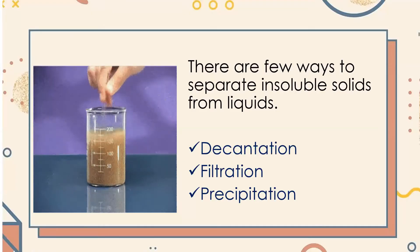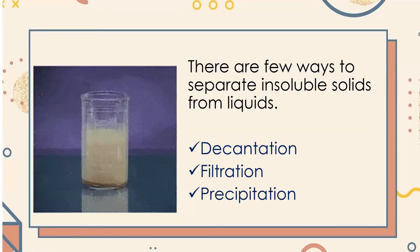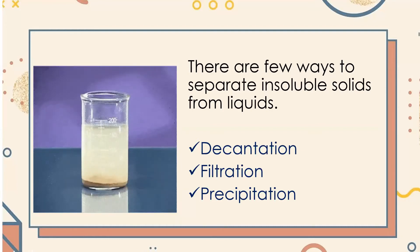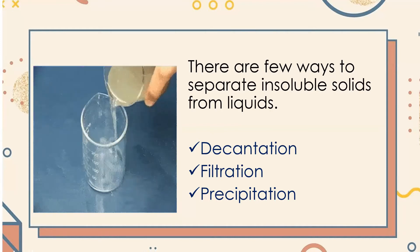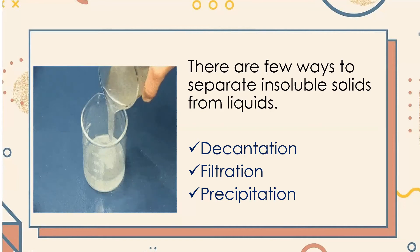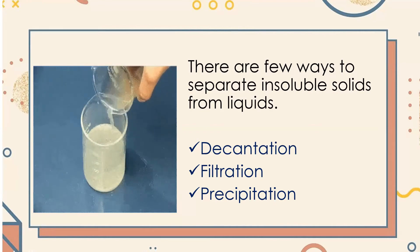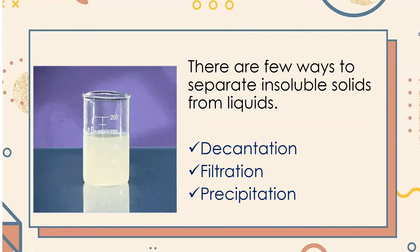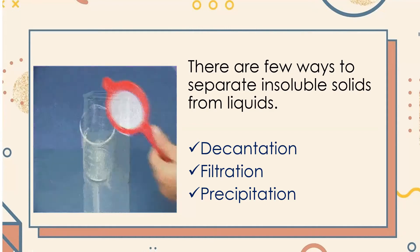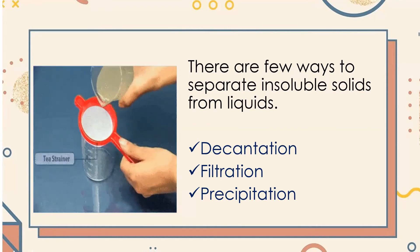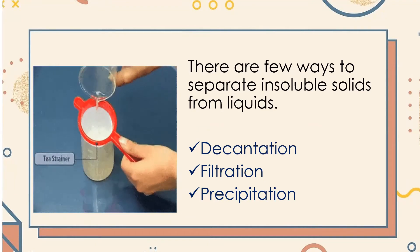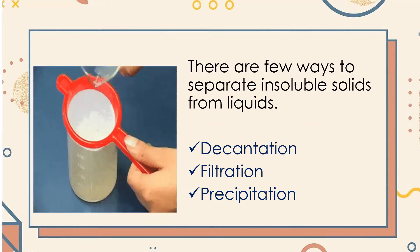So there are a few ways to separate insoluble solids from liquids. When we say insoluble, it means cannot be dissolved — solids that cannot be dissolved in liquids. There are three ways to separate insoluble solids: first, decantation; next, filtration; and precipitation.